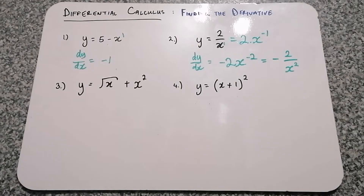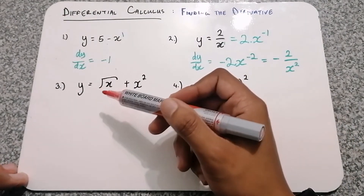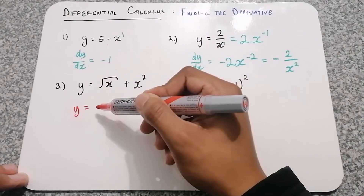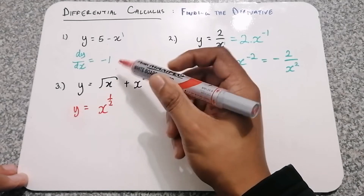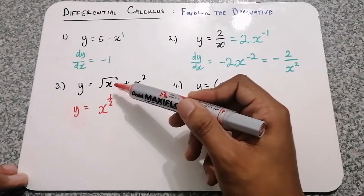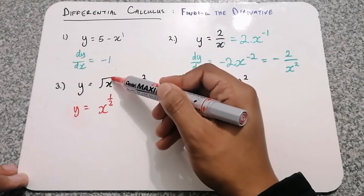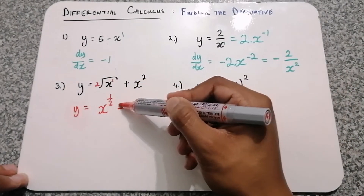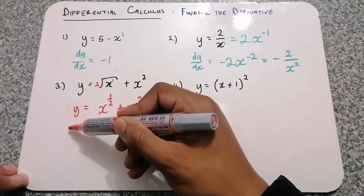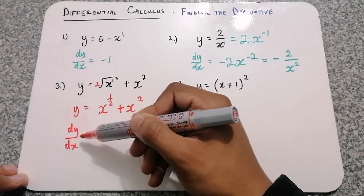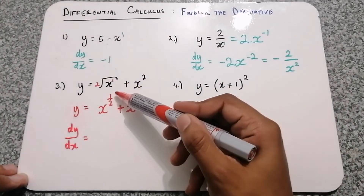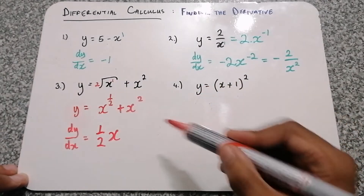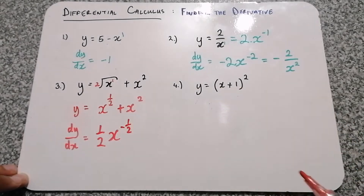Let's do the next one. For question 3, we have the square root of x. First I want to express it in a better form so it's easier to take the derivative. We're going to write it as x to the power of a half. The square root of x is written as x to the power of 1 over 2 — that's simply the exponent on the inside divided by the root. Now we take the derivative as per normal. The exponent of one half is multiplied in front, then we minus 1 from that exponent, giving x to the power of negative 1 over 2.